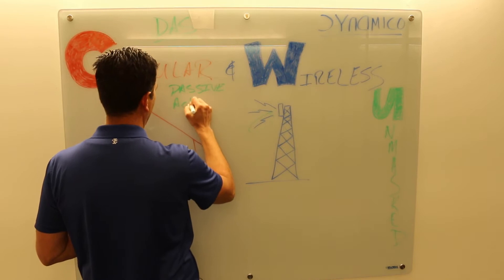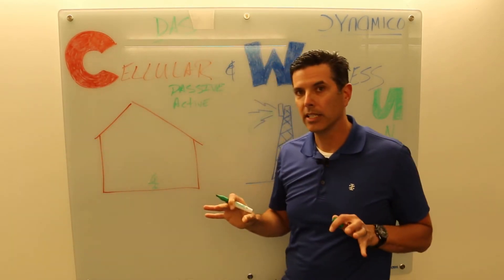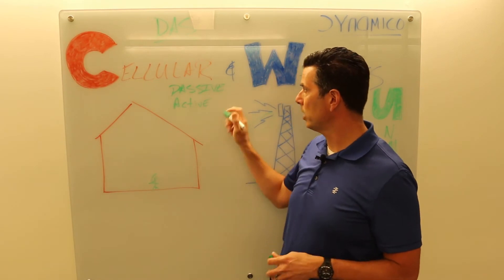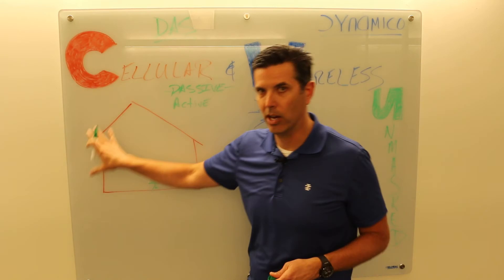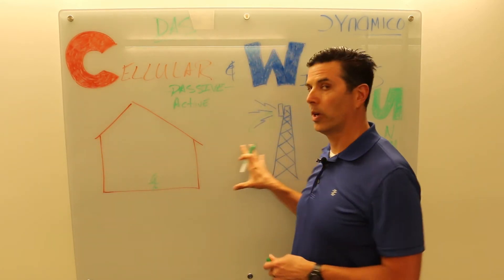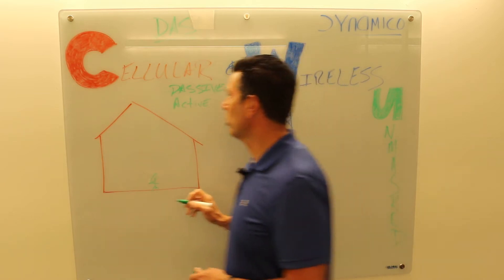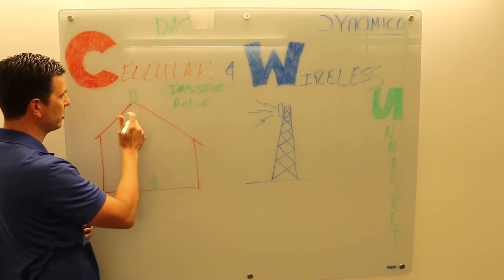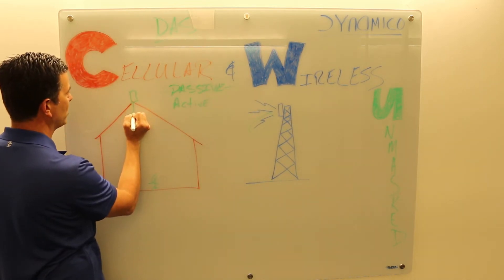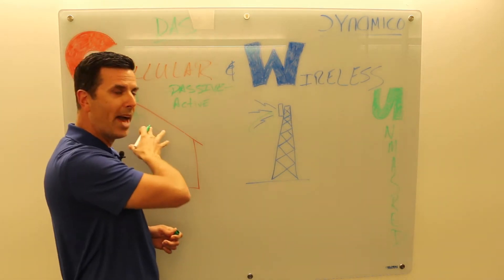Way back when in cellular, there really was a true passive DAS. If you had a warehouse and the cellular coverage wasn't very good, you couldn't get reception inside the building, you could place a high gain antenna on top of your roof to receive the cellular signals and place coax with another antenna inside the building. There's nothing active here, this is all passive.